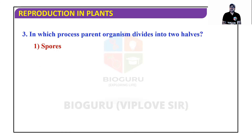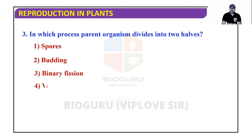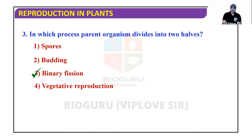MCQ: In which process does the parent organism divide into two halves? Options: spores, budding, binary fission, or vegetative reproduction? Since two equal halves are mentioned, the correct answer is binary fission.